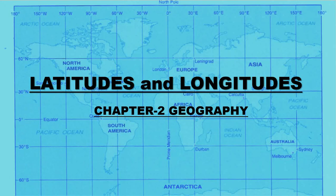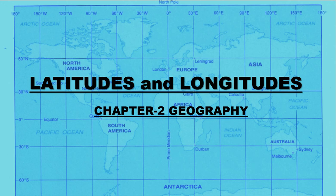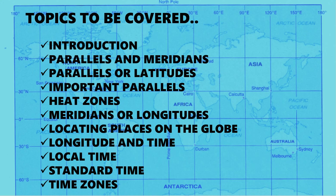Hello, good morning everyone. Today I am here with the very second video of the very second chapter of Geography from Integrated Social Science, and that is Latitudes and Longitudes. In the previous video we discussed a brief description on parallels and meridians — the globe, which is a true representation of the earth, has two sets of circles: one set called parallels and the other set called meridians. Today we will be reading about parallels or latitudes as well as important parallels.